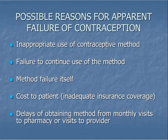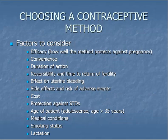Unintended pregnancies can occur despite patient use of contraception. Some possible reasons include inappropriate use of the contraceptive method, failure to continue using the method, method failure itself, or barriers to accessing contraception because of cost or inconvenient visits to a clinician or pharmacy. As you counsel patients about their contraceptive choices, consider these factors and how they apply to each individual patient.